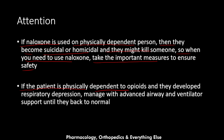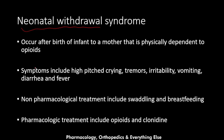Neonatal withdrawal syndrome occurs after birth of an infant to a mother who is physically dependent on opioids. The opioids pass to the baby in utero, and when the baby is born the opioid supply stops, causing withdrawal. Symptoms differ from adult withdrawal and include high-pitched crying, tremors, irritability, vomiting, diarrhea, and fever. Non-pharmacological treatment includes swaddling and breastfeeding.